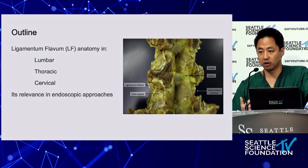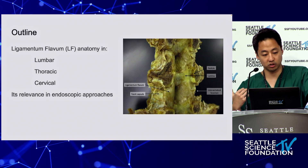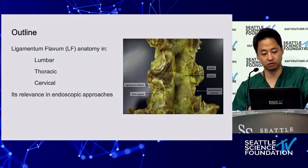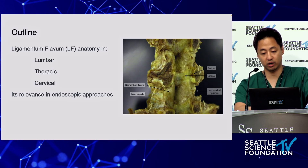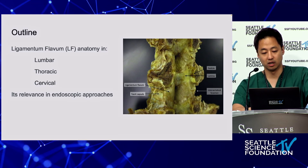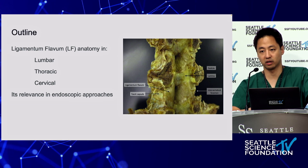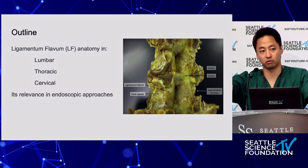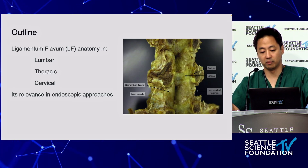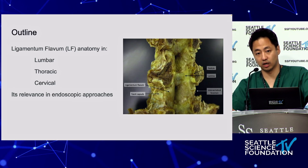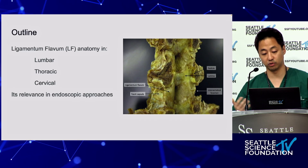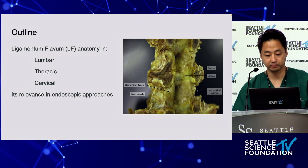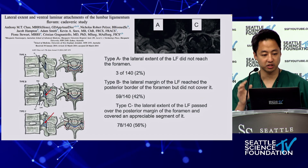We're going to start with lumbar and move up into cervical, and I'll tell you why these findings are relevant. Throughout this talk you'll see cadaver models cut coronally at the levels of the pedicle. We're going to open the posterior elements of the spine — but instead of opening at the lamina, we're opening at the level of the pedicle — and we're going to look at the ventral aspect of the ligamentum flavum.